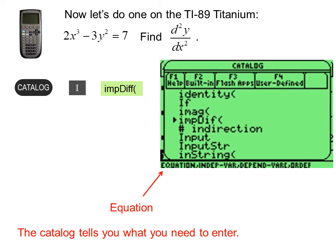We enter the equation, the variable, which in this case is x, the dependent variable, which in this case is y, and the order, which in this case is 2, because we want the second derivative.